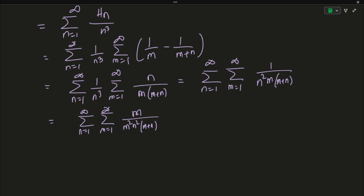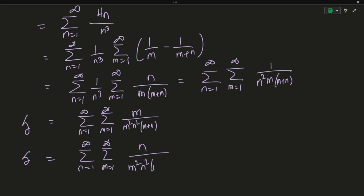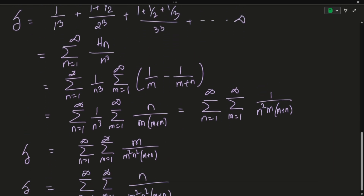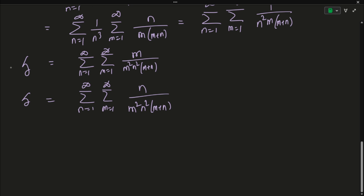We observe that this double sum is symmetric in m and n: if m and n are exchanged, the sum does not change. So the numerator could equally well be n instead of m. Since the denominator and summation indices are the same, having m in the numerator is identical to having n in the numerator. Therefore S can also be written with n in the numerator, and we could have arrived at this by simply relabeling the summation indices.